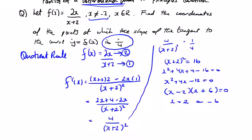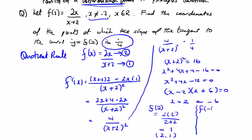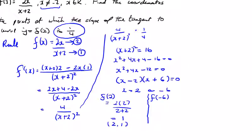There are two points where the slope of the tangent is 1/4. For x = 2: f(2) = (2×2)/(2+2) = 4/4 = 1, so the point is (2, 1). For x = −6: f(−6) = (2×−6)/(−6+2) = −12/−4 = 3, so the other point is (−6, 3).